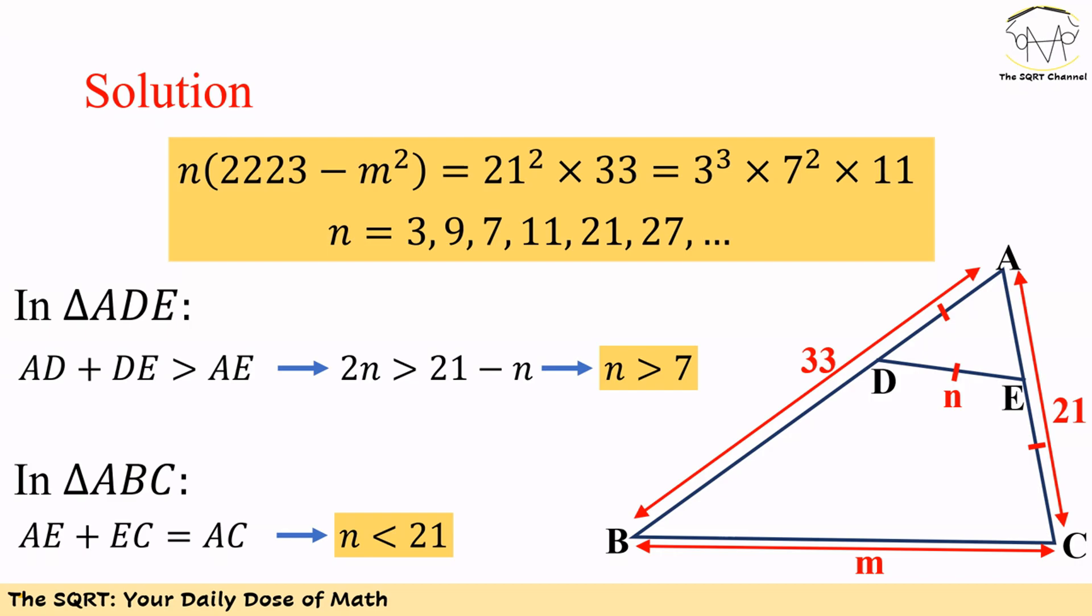At the same time, in triangle ABC, point E is on side AC, so AE plus EC should be AC, which is 21. It means N should be less than 21.